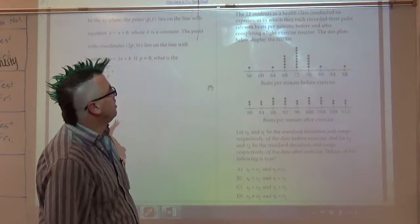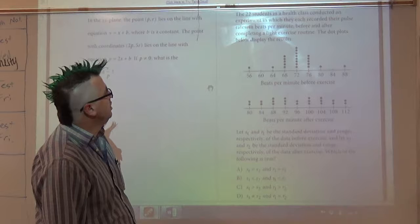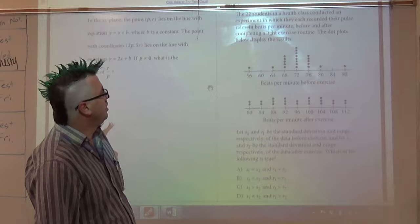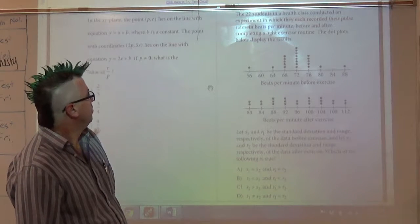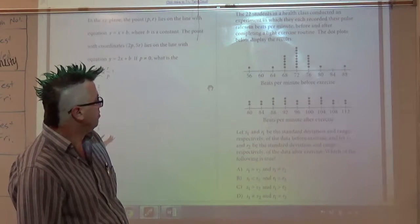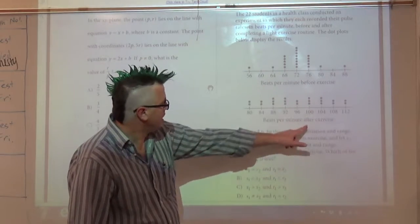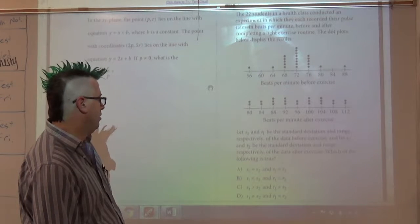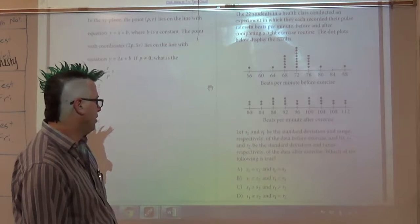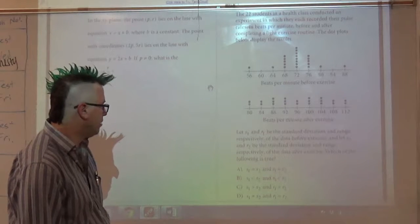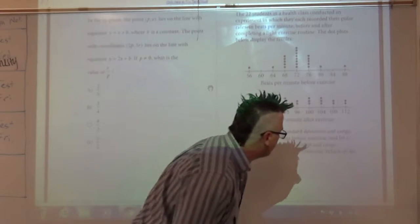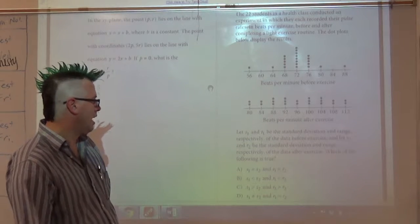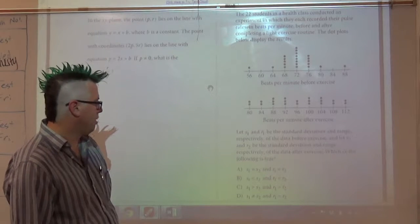Problem 28: The 22 students in a health class conducted an experiment in which they each recorded their pulse rates in beats per minute before and after completing a light exercise routine. The dot plot below displays the results. So we've got before, we've got after. Let S1 and R1 be the standard deviation and range respectively of the data before exercise, and let S2 and R2 be the standard deviation and range respectively of the data after exercise. Which of the following is true?